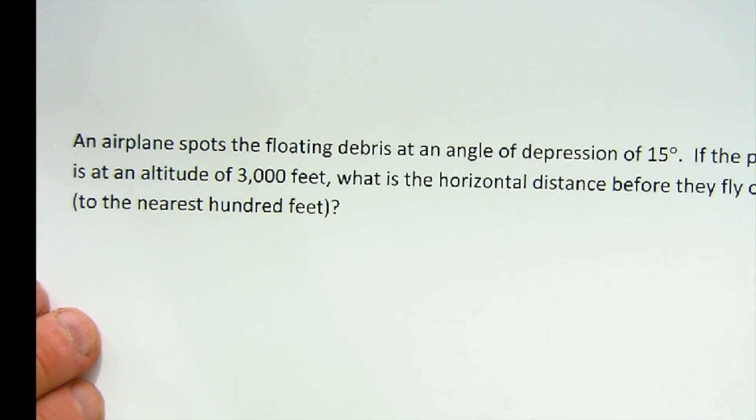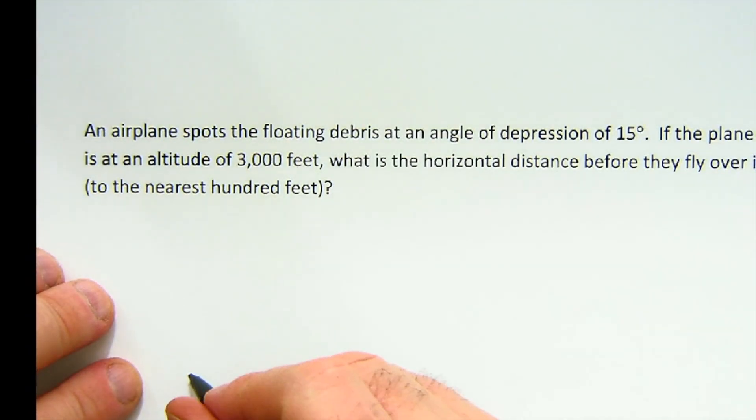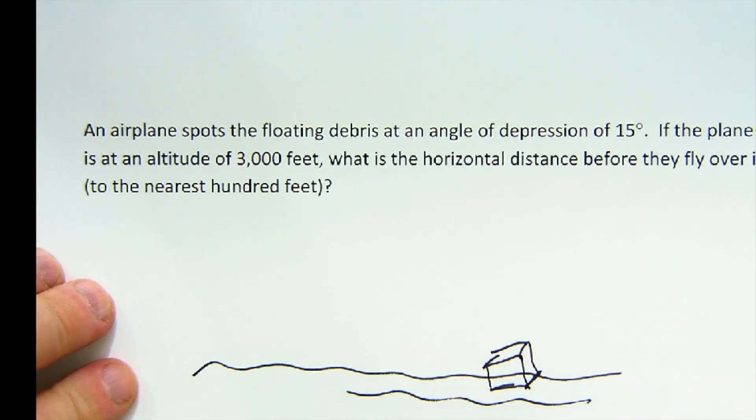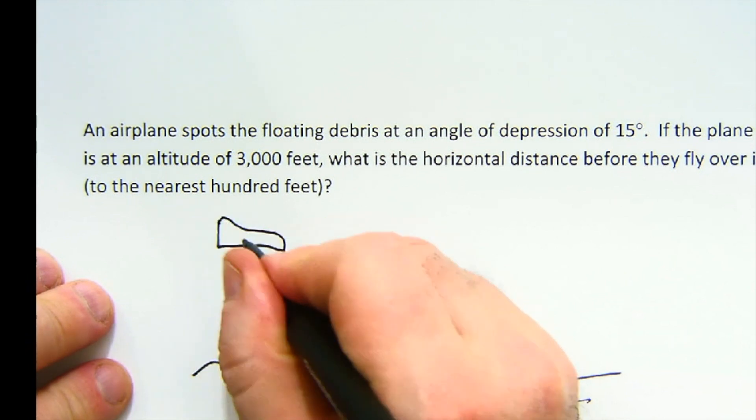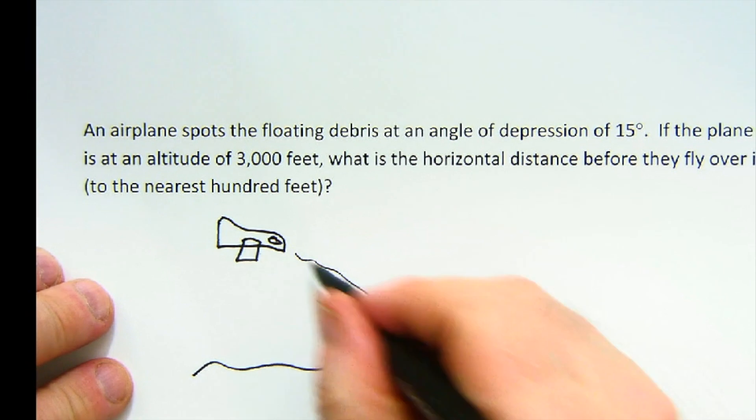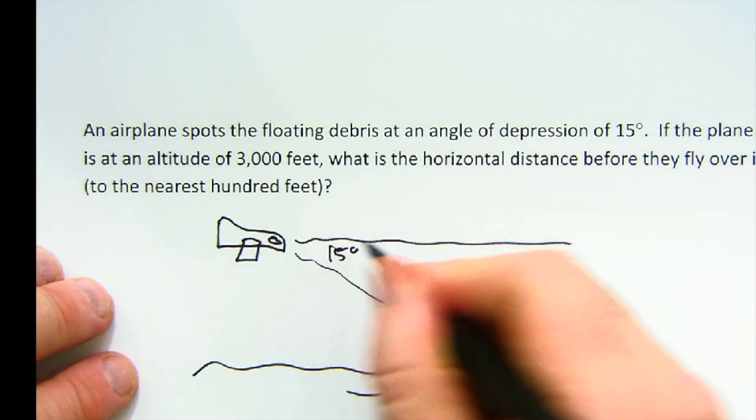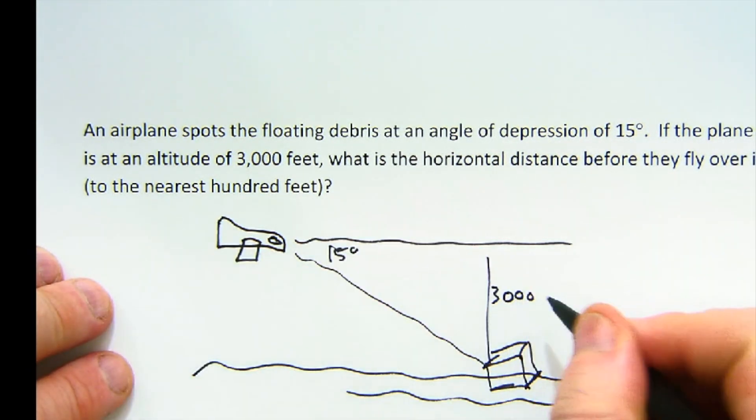Maybe I will do one more just because it's an angle of depression problem. An airplane spots some debris floating out there. So, here's our debris out here floating in the water. Our airplane is over here. Looking down on the debris, I create my relationship here. It looks down at 15. Notice where I put that. And the altitude is 3,000.